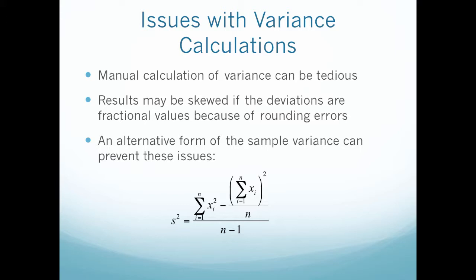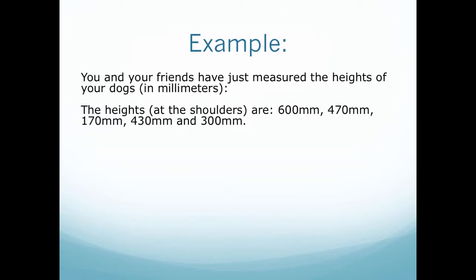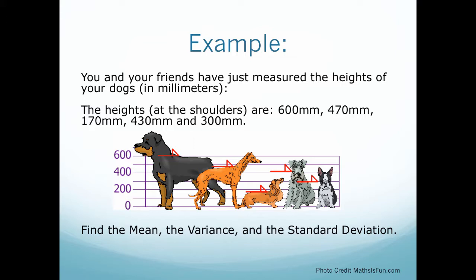You and your friends have just measured the heights of your dogs in millimeters. The heights at the shoulders of each dog are 600 millimeters, 470 millimeters, 170 millimeters, 430 millimeters, and 300 millimeters. Here's a graphic representation of your dogs. Find the mean, the variance, and the standard deviation of this data set.